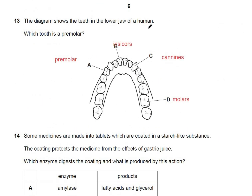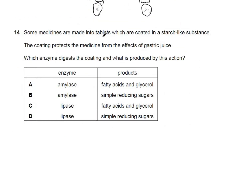Question 13: which tooth in the lower jaw is a premolar? You should learn the labeled diagram of the human jaw. A represents premolars, B represents incisors, C represents canines, and D represents molars. The premolar is A.